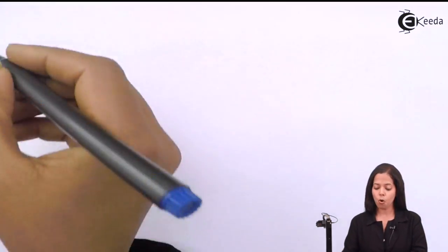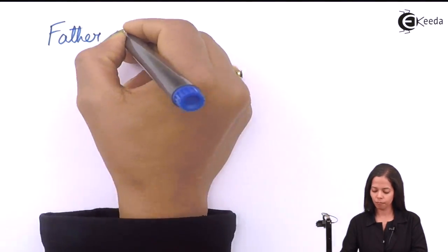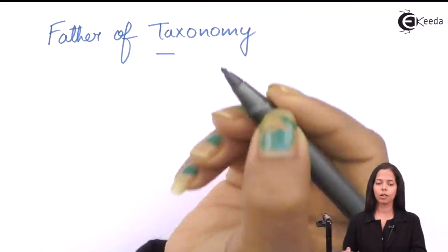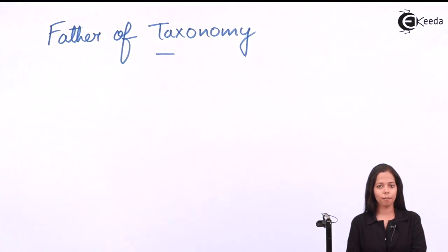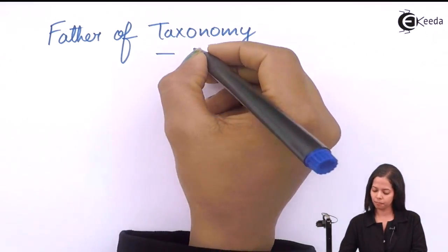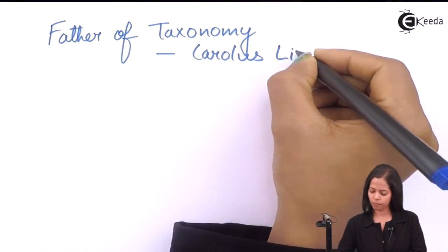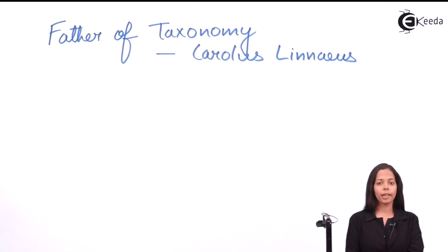Before we study domain in detail, there are a few points related to taxonomy and classification which you need to remember. The first thing which you need to remember is who is father of taxonomy. The name of that person or the scientist is Carolus Linnaeus.